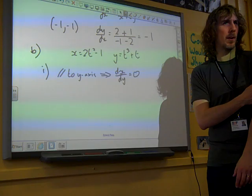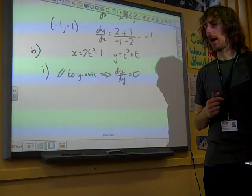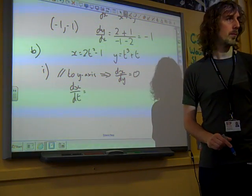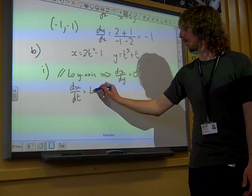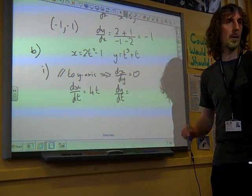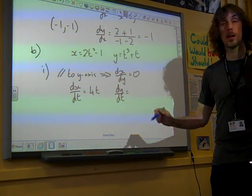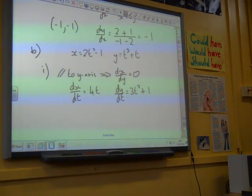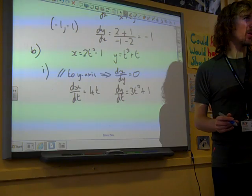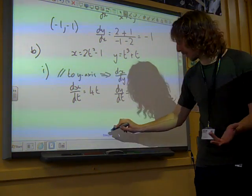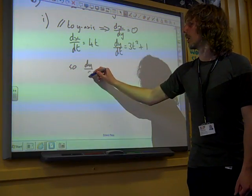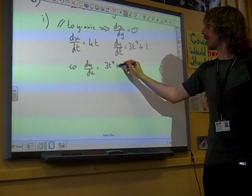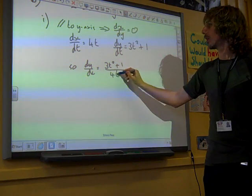Let's go through what we normally do with this and see where it takes us. We start by finding dx/dt. What would dx/dt be? 4t. dy/dt? 3t squared plus 1. To find dy/dx, we divide dy/dt by dx/dt. So that's 3t squared plus 1 over 4t.